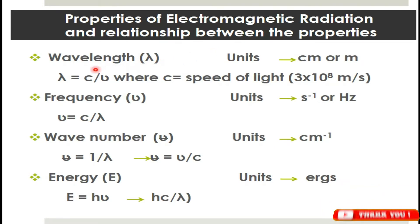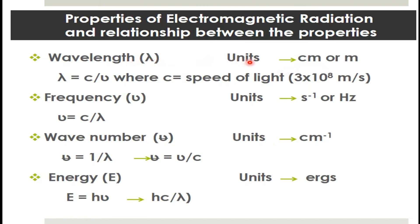Wavelength, lambda, is represented by this Greek symbol and its units are centimeter or meter. The units used for wavelength depend upon the electromagnetic region we study. For example, in the case of UV — that is ultraviolet — and visible region, the wavelength used is nanometer.